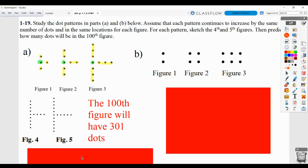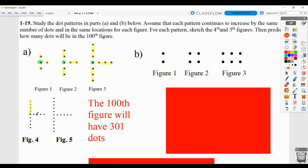So based on that pattern, we'd expect figure four would have that one in the middle again. Then four above, four to the right, four below. And figure five, again that one. And then five above, five to the right, five below.